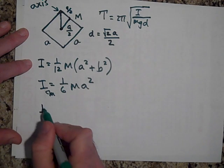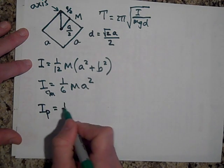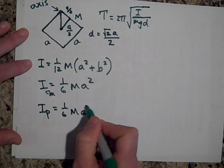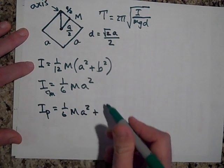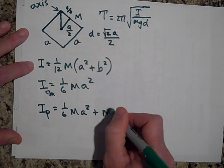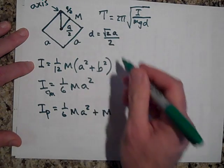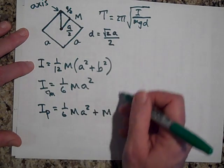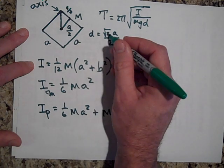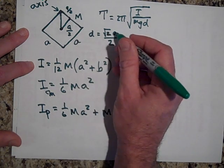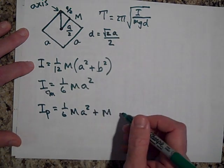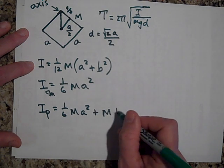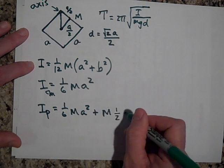And so I parallel is going to be one sixth m a squared, plus, and now I got to add this additional term, m times that squared. So that's going to be two a over four. When I square this, won't that give me two a over four? So that's one half a squared.